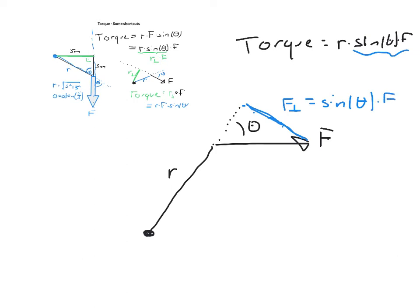Which is nothing else than sine theta times F. That means if I can easily find the part of the force that is perpendicular to my r, I can use the following new equation. So torque is F perpendicular times the force, or the length of the lever.